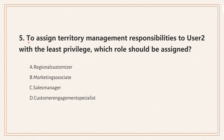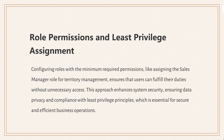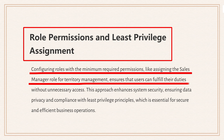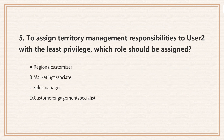Question 5: To assign territory management responsibilities to user 2 with the least privilege, which role should be assigned? The knowledge point is role permissions and least privilege assignment. Assigning roles with only the necessary permissions, like sales manager for territory management, ensures secure access without extra privileges, keeping data safe and compliance simple. The correct answer is the sales manager role — it has just enough permissions to manage territories without any extra access, the right balance for secure and efficient role assignment.